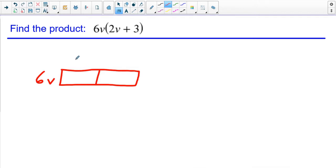You could switch those around. That's fine. And the other piece, I'm going to put in here, 2V plus 3. So what I'm going to do now is just multiply these. 6V times 2V is...